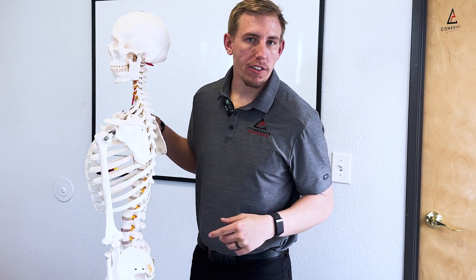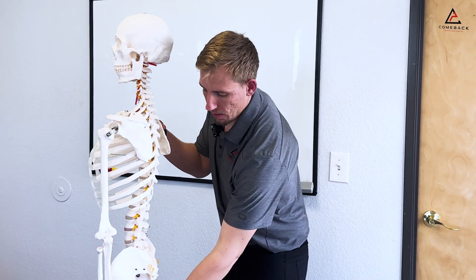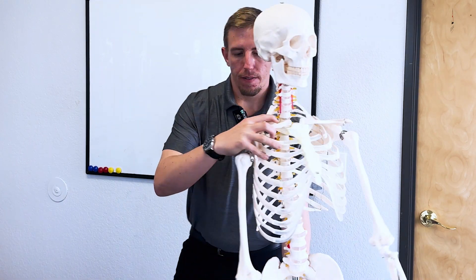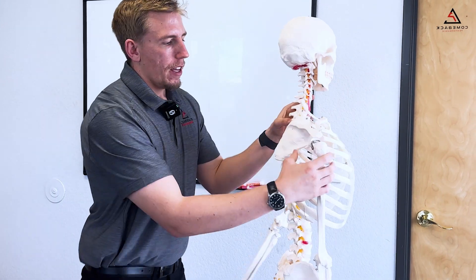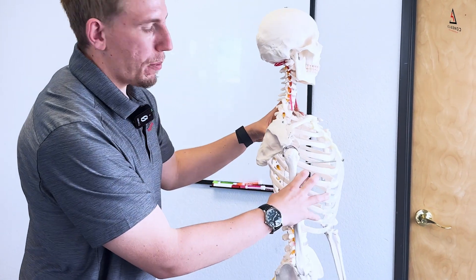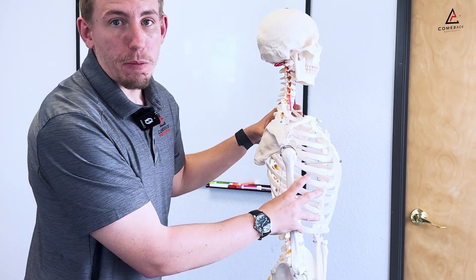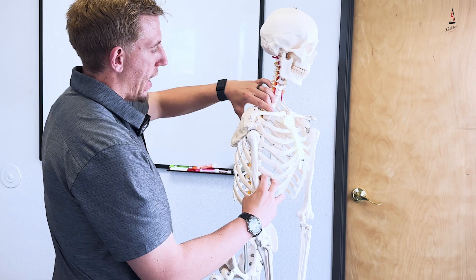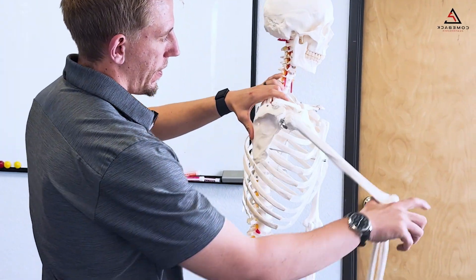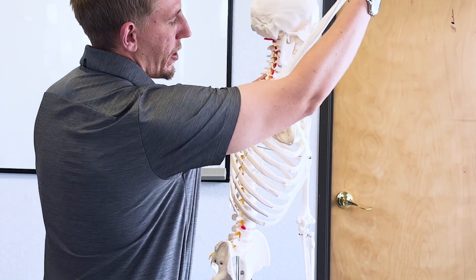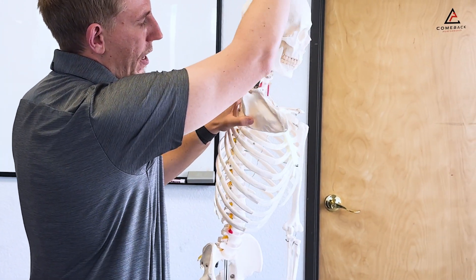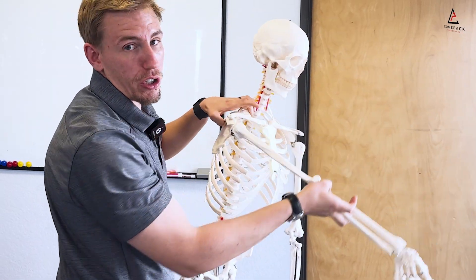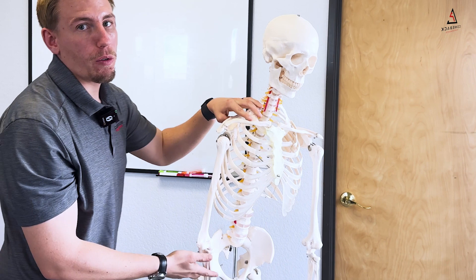Now on the other side, this shoulder blade is actually able to move the entire way. So as it comes up, it clears that space and allows the shoulder to get into more rotation.